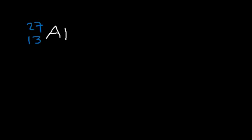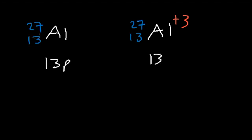A common question in chemistry is determining the number of protons, neutrons, and electrons inside an atom or ion. For example, consider the aluminum atom with a mass number of 27 and atomic number of 13, and also the aluminum ion with a charge of plus 3. The atomic number is the number of protons, so both the atom and the ion have 13 protons.